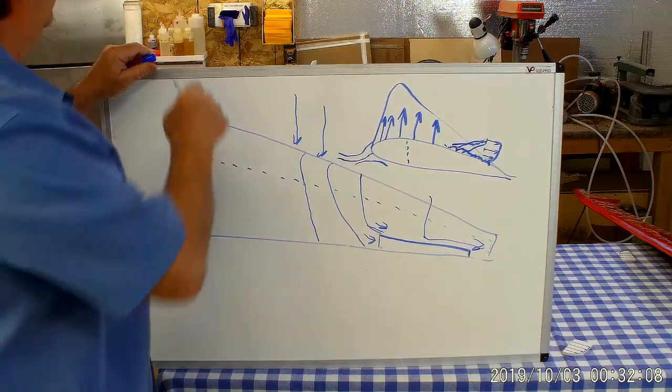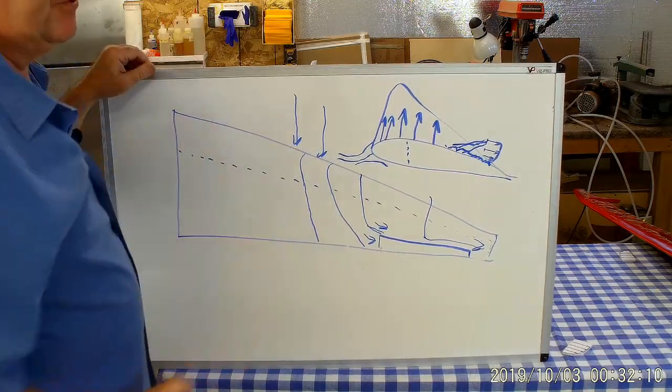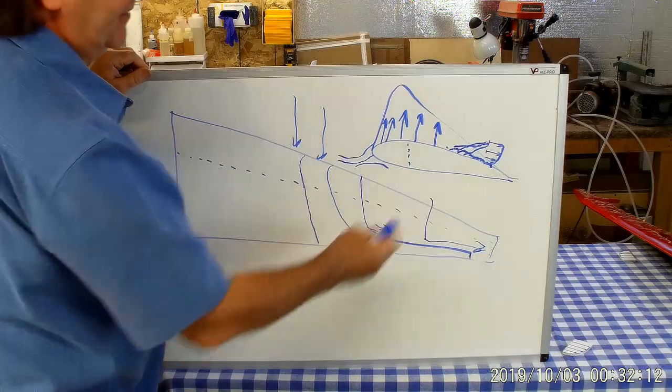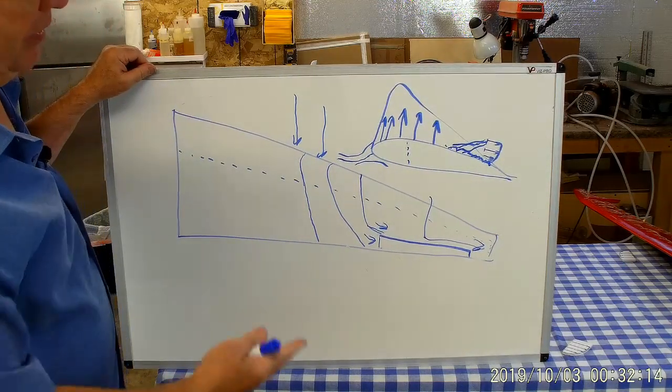And that is true of any swept wing that has a control surface out here—it will tend to do that.